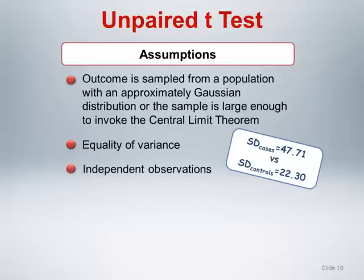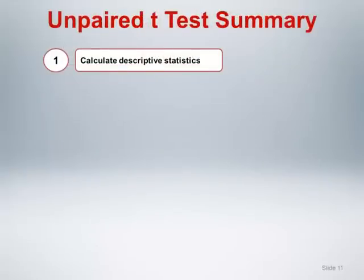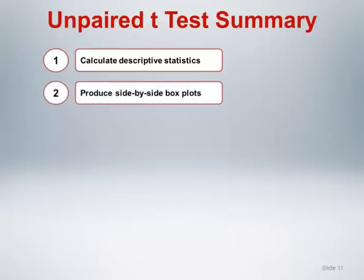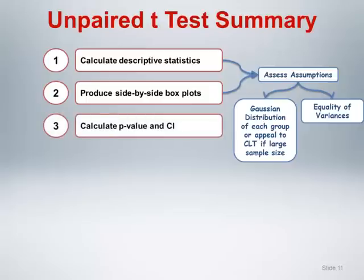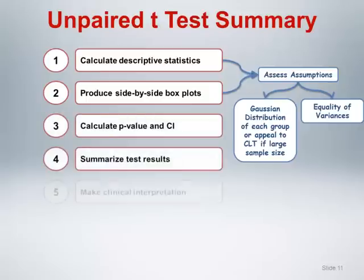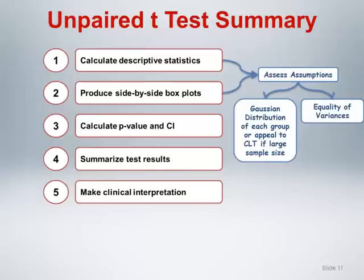Each observation is selected independently of the others. In summary, to perform an unpaired t-test, do the following: calculate descriptive statistics; produce side-by-side box plots. These numerical and graphical summaries should be used to assess the key assumptions of the test — Gaussian distribution of each group and the equality of variances of the groups. Assuming that the assumptions are satisfactorily met, next calculate the p-value and confidence interval. Summarize the test results and remember to distinguish between the statistical significance and the clinical significance of the results.